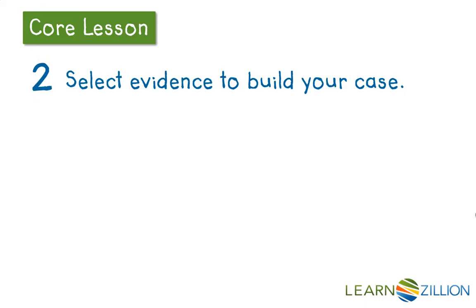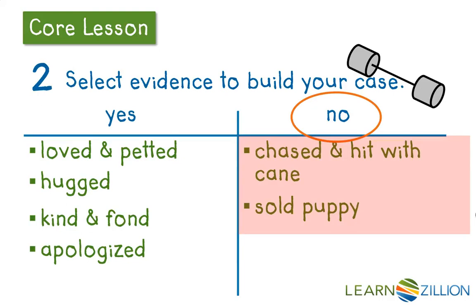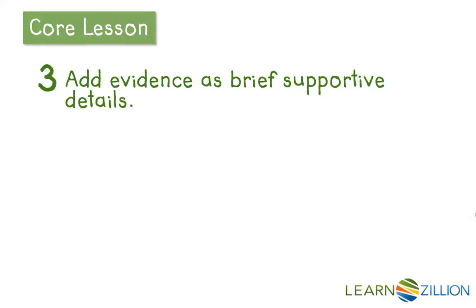Now we're going to select some evidence to build your case. To do that, we go back to our t-chart — there are my barbells, showing we're going to build it up and make it stronger. We see on the right the evidence for no: chased and hit with cane, and sold puppy. That's the evidence we want to combine with the sentence we've already started. Notice it says brief supportive details, because we're trying to fit this all into one sentence.